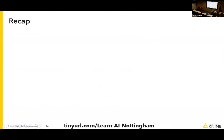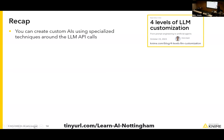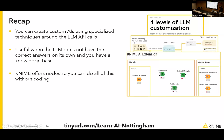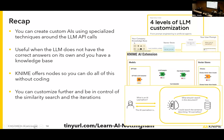A recap of what we covered today: one — you can create custom AI around large language models and customize the process; two — this is useful when the LLM doesn't know something on its own, and you can use vector stores to provide answers; three — you can do all of this without coding using KNIME nodes; four — you can customize a lot of the process of having the AI think on its own.